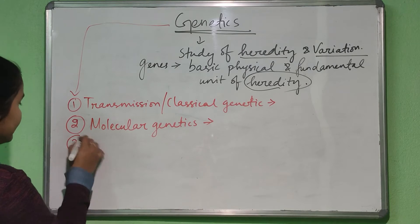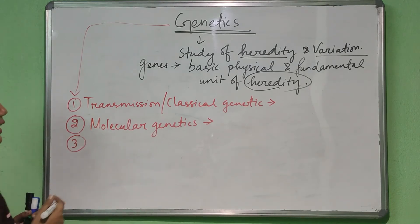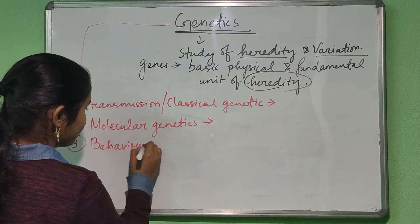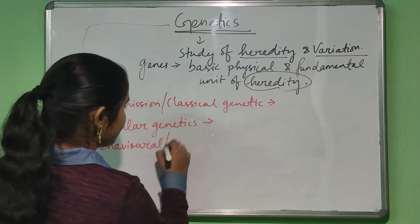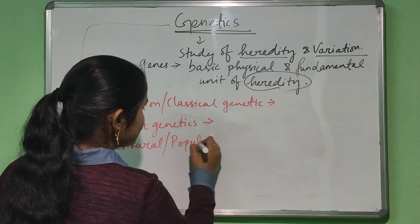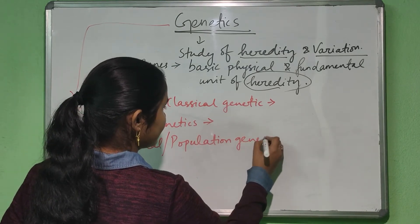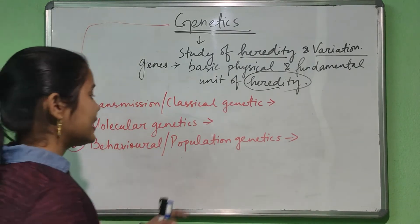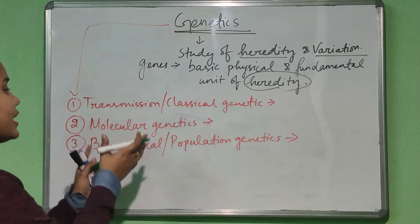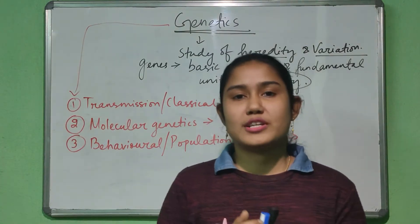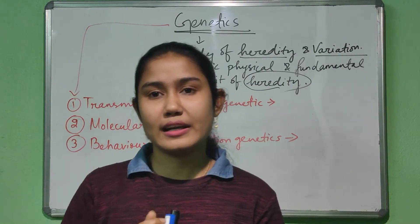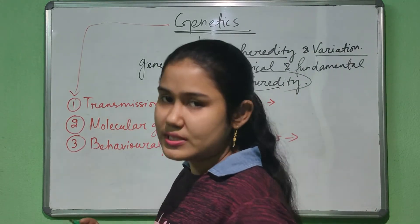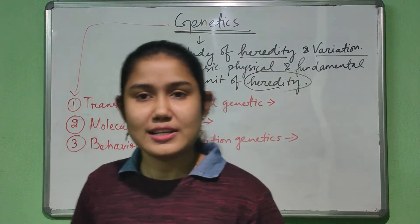In the third area, we will study behavioral genetics or population genetics. So what is population genetics? It is the study of behavior of genes in the population. In a particular population, we will study about the behavior of genes — that is the population genetics.